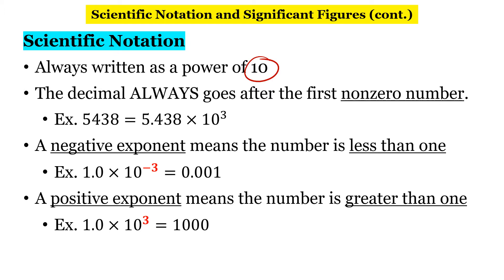The decimal always goes after the first non-zero number. So in our number 5,438, the first non-zero number from left to right is 5. So the decimal goes after that 5. We move the decimal place 3 places, which is why we end up with times 10 to the third.